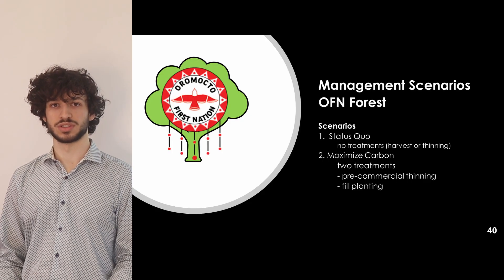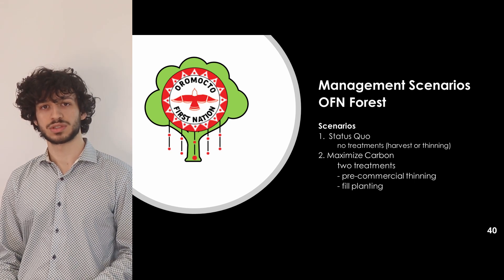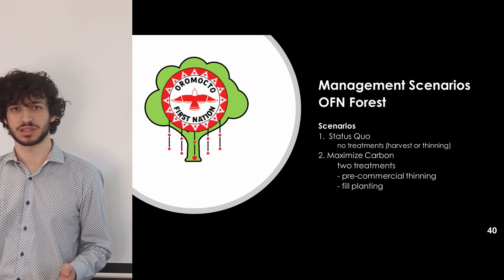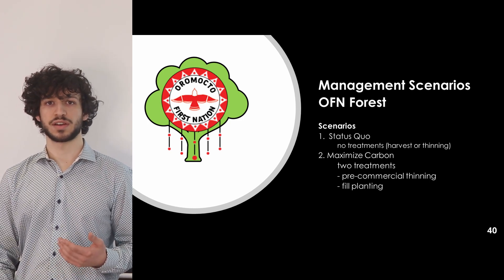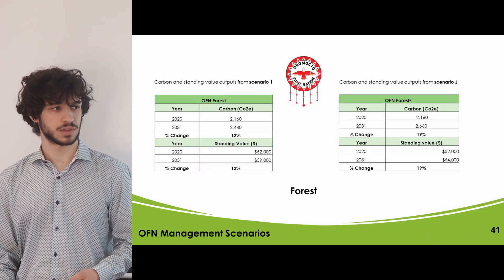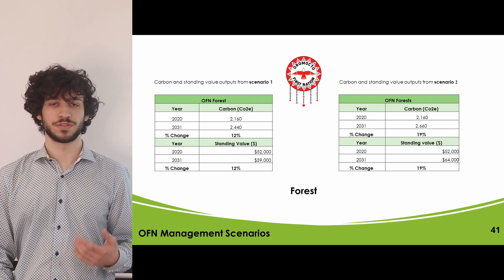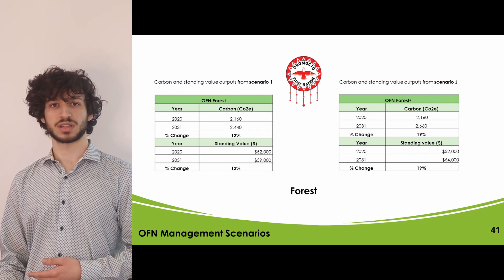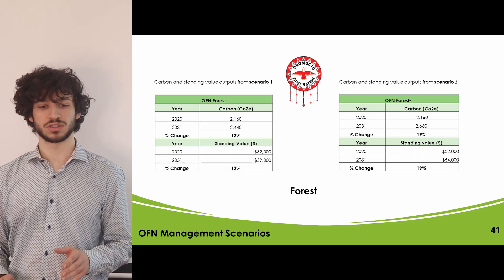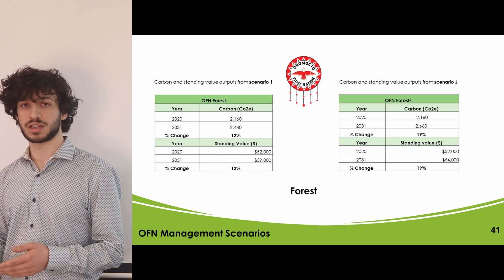For the orphan forest modeling, two scenarios were used: the status quo scenario where nothing is implemented, and the maximized carbon scenario with two treatment options — pre-commercial thinning and planting. In Scenario 1, carbon storage and standing value increase by about 12%, and in Scenario 2 by 19%. Scenario 1 still achieves the objective at less cost.